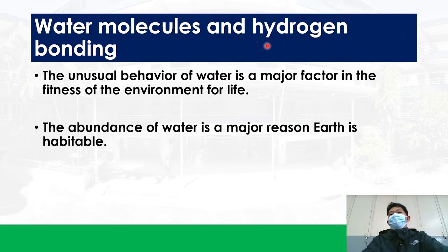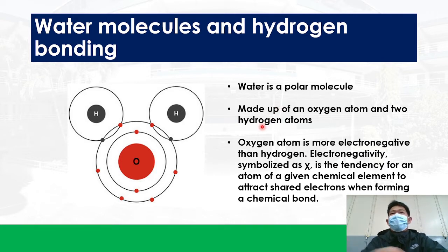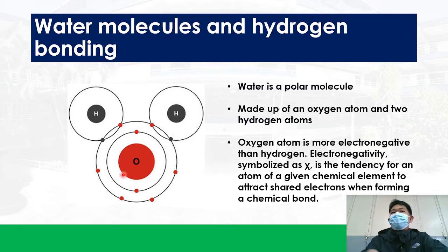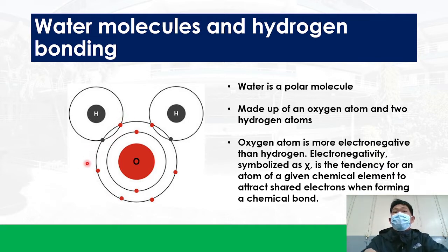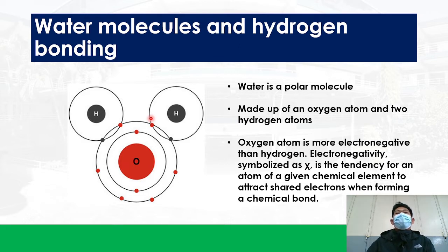Let's review the structure of the water molecule. A water molecule is a polar molecule, made up of an oxygen atom and two hydrogen atoms. Oxygen is more electronegative than hydrogen atoms, so it has the tendency to attract the shared electrons when they form this structure — a covalent bond, because they share the electrons. Because of that electronegativity of the oxygen atom, it leads to the polarity of the water molecule.